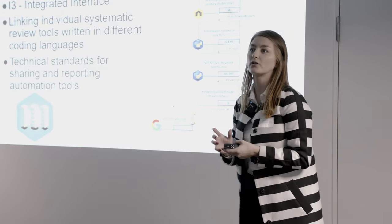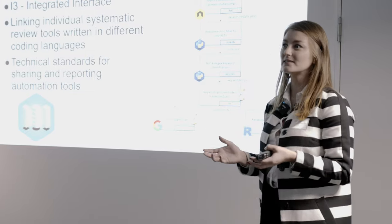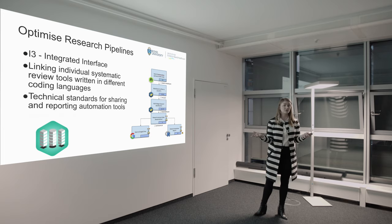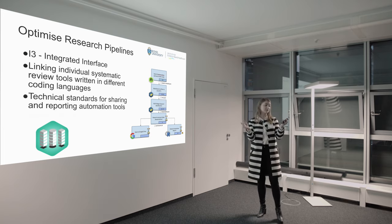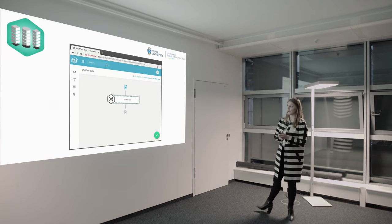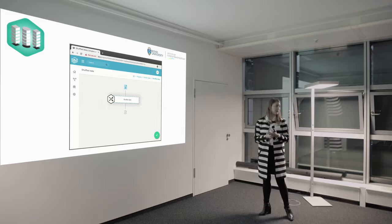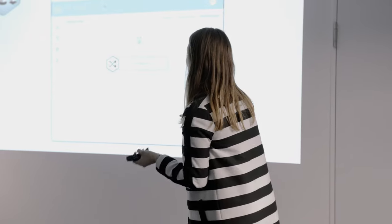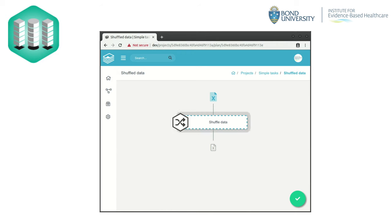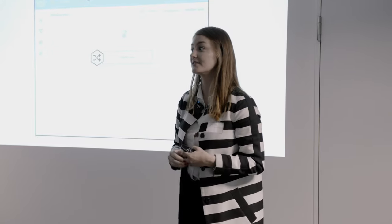We also wrote this up to create some sort of technical standards — what's the minimum amount of information that you need to publish when talking about an automation tool, so that we can take that and put it into an interface. And very recently, just before I got on the plane, my amazing developer has actually been working on the front end, so researchers without any programming experience can take apps or automation tools and drag and drop them into a systematic review research pipeline and utilize them.